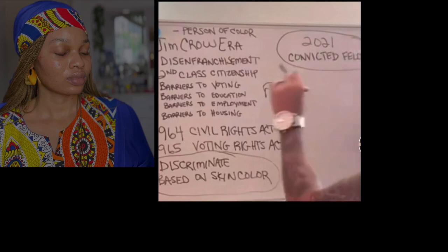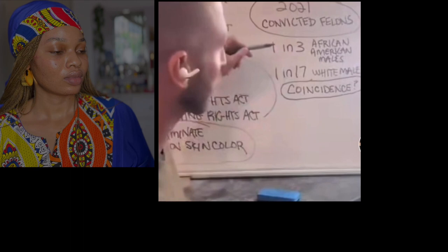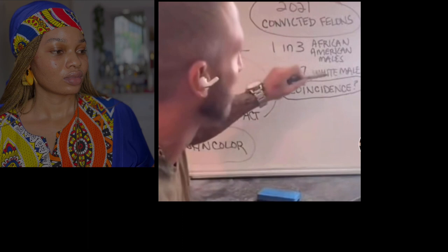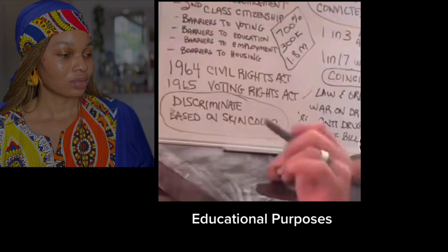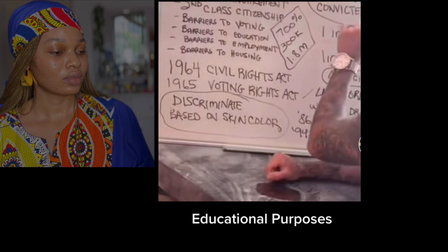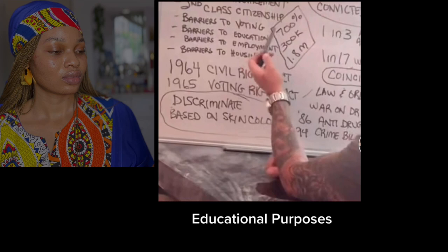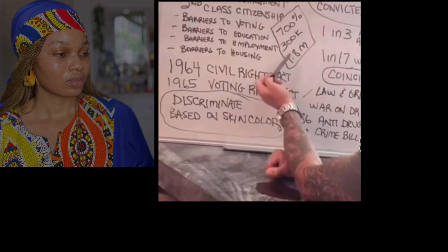Do you believe it's a coincidence that one in three African-American males carry the label of convicted felon, as opposed to one in 17 white males? To legally be disenfranchised? If you answered yes, let's look at what happened between the Jim Crow era and 2021: a 700% increase in the U.S. prison population — from 300,000 inmates in 1970 to 1.8 million today, and as high as 2.3 million. In spite of crime rates dropping, our prison population skyrocketed.